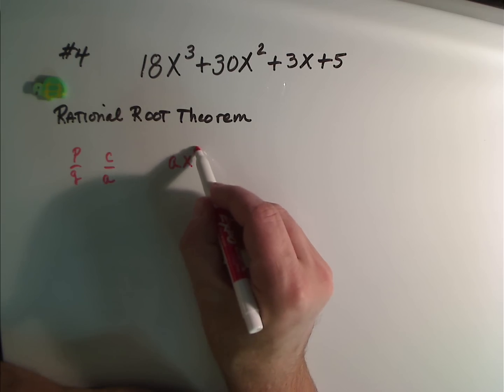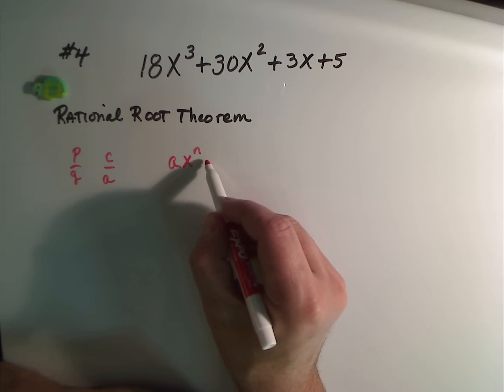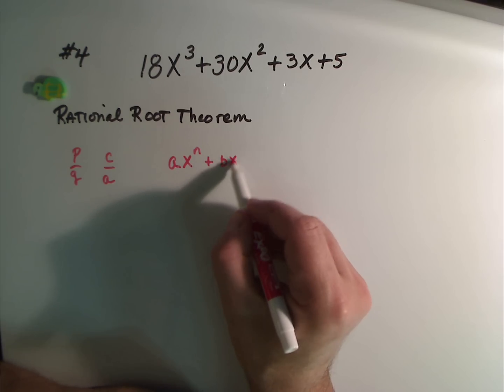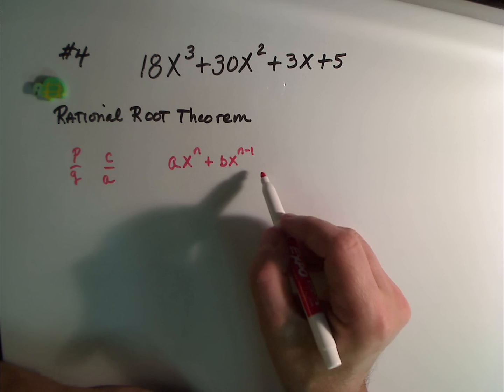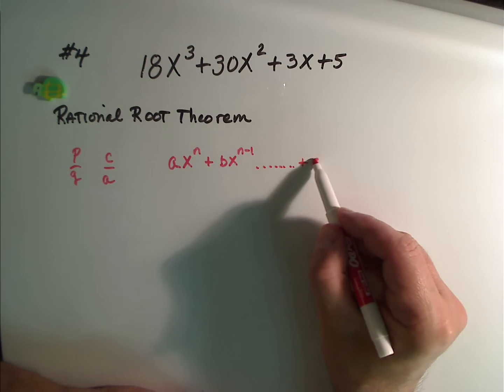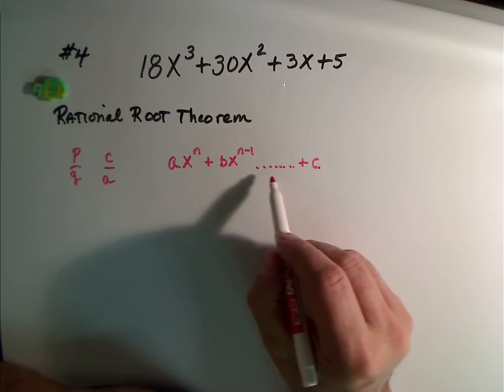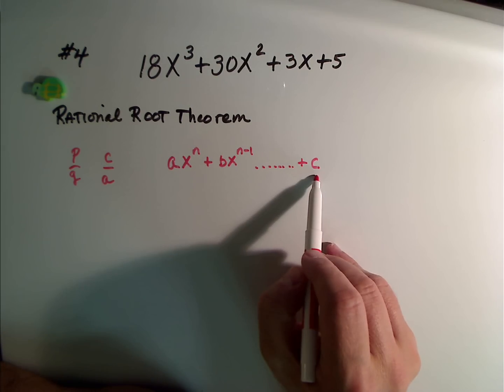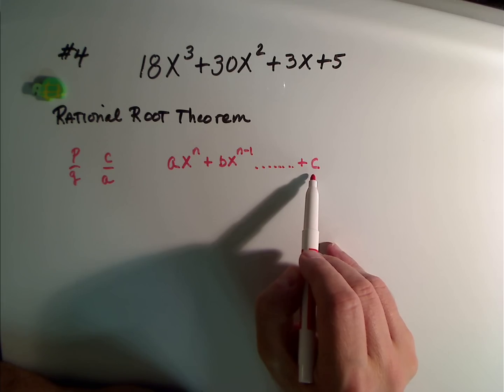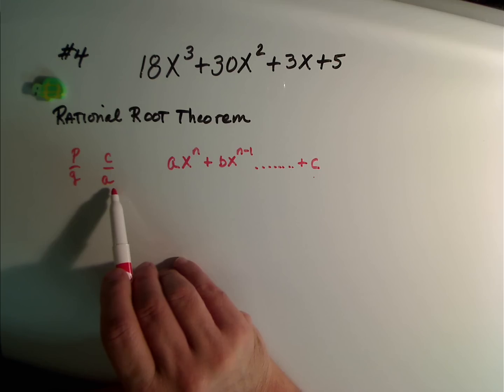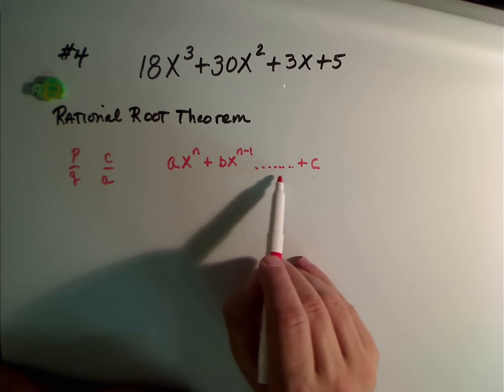A x to the highest power plus B x to the power right below that, all the way down until finally you have just your constant. So A is the leading coefficient, and C is the coefficient of constant. And the Rational Root Theorem says look at all the factors of the constant over the factors of the lead coefficient when you have the polynomial in standard form.